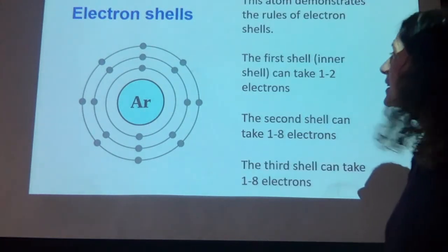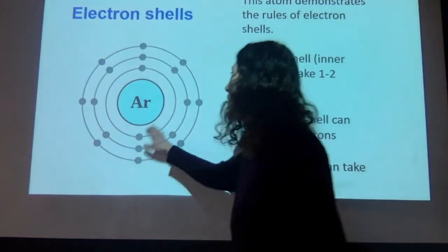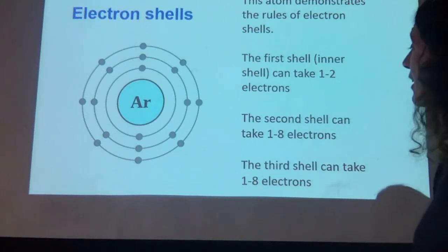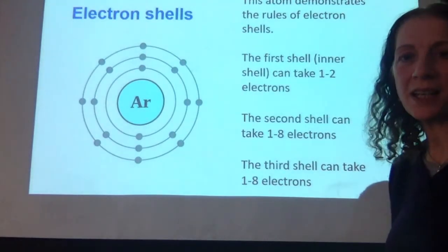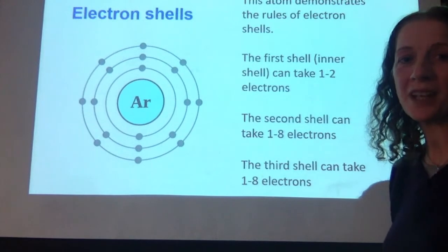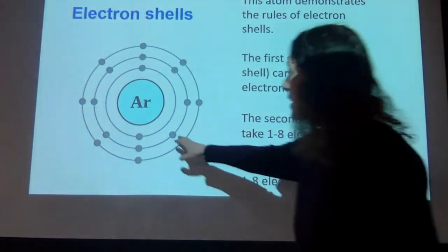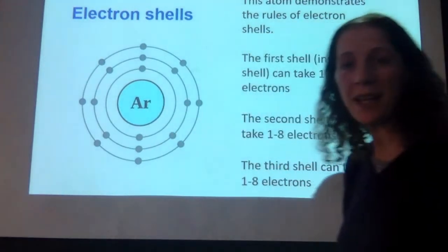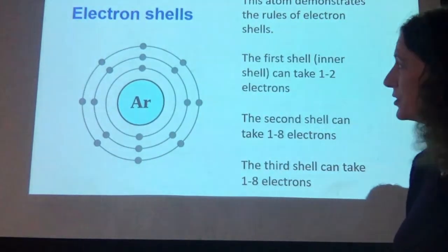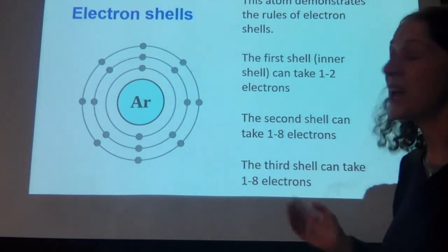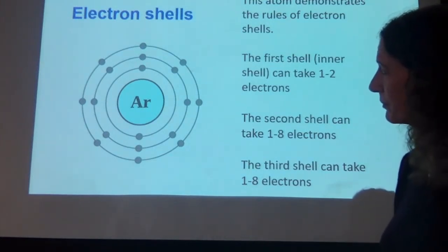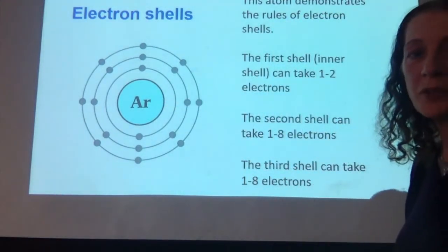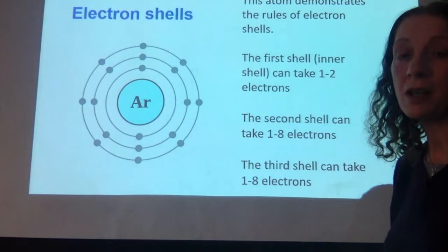In this atom, in the inner first shell, there are two electrons. What that means is the first shell can only take one or two electrons, not more than that. The second shell — counting from inside going outwards — can take up to eight electrons, no more than eight, though it can have less. The third shell, again, can take up to eight electrons, no more than eight.